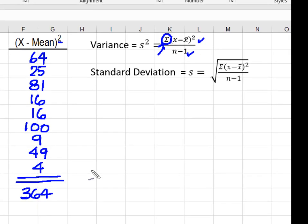So now I'm going to take 364 divided by 8, which is going to give me 45.5. And this is the variance.